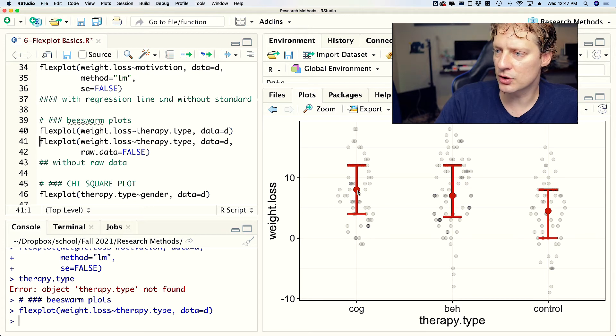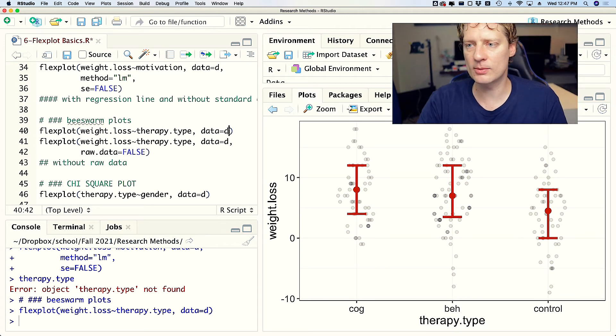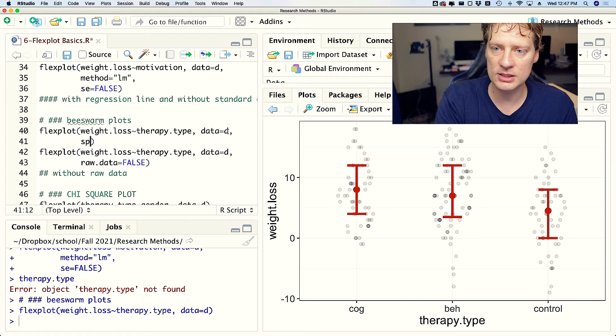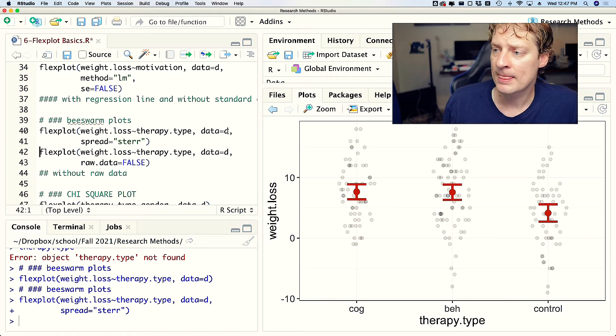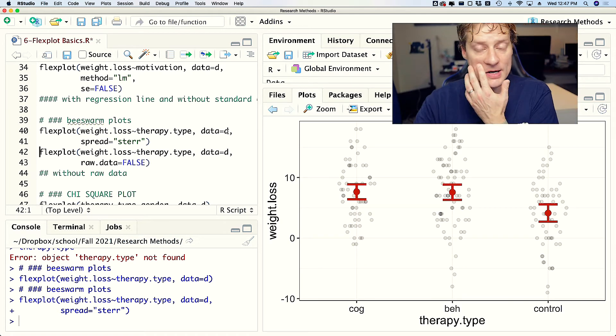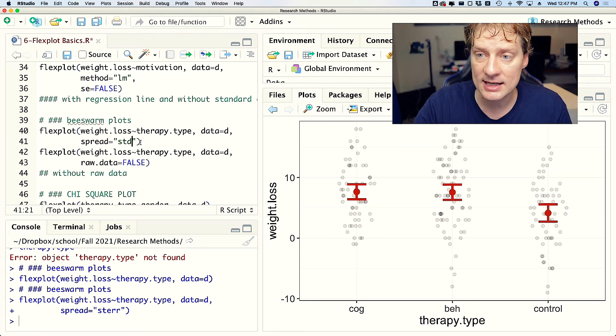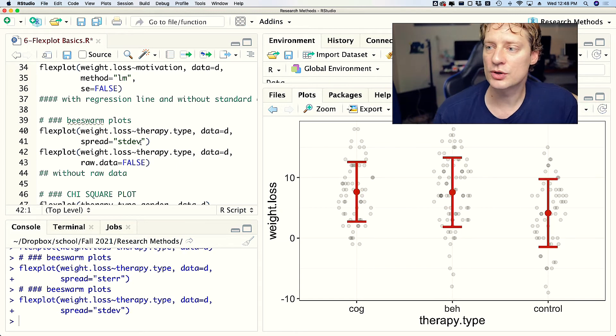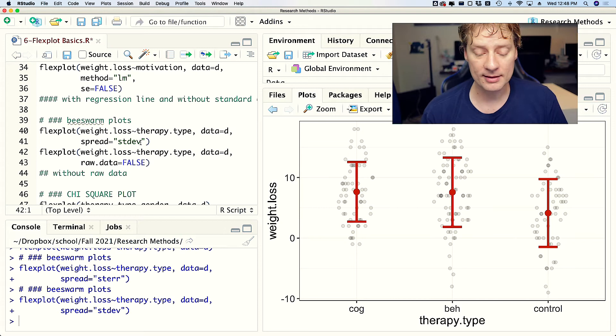By default it shows median and the interquartile range. You could instead do spread argument equals STERR for example, for standard error, and that will show you mean and standard errors. Or you could go STDEV and it will show you mean and standard deviations.